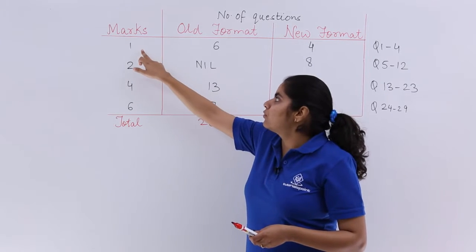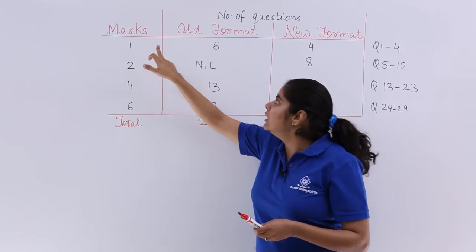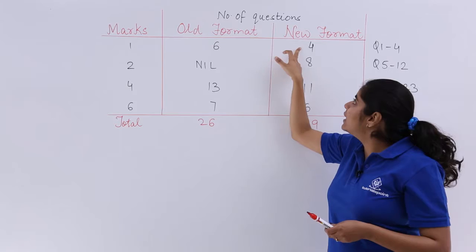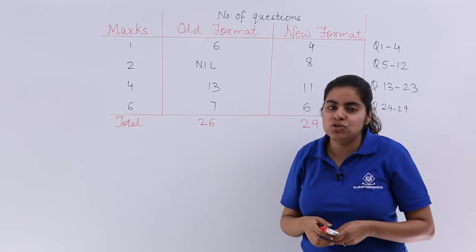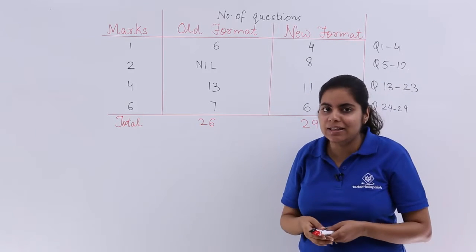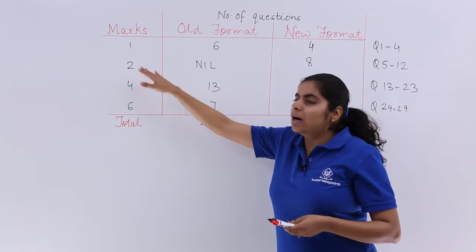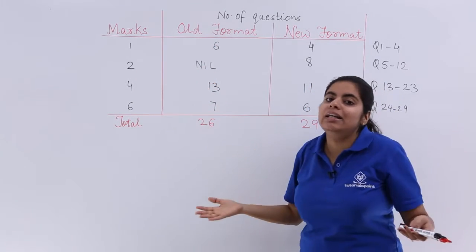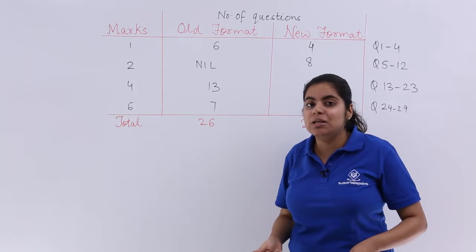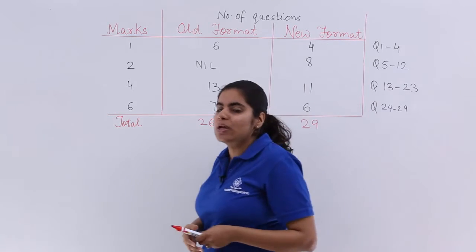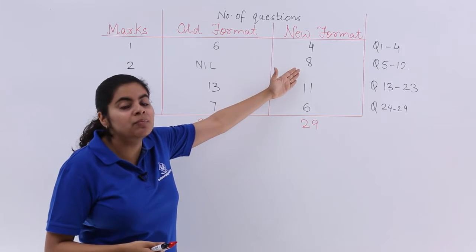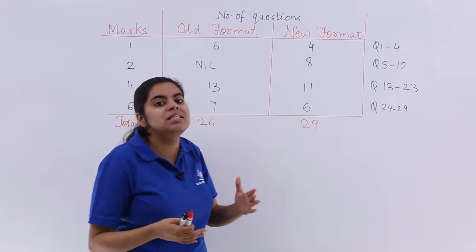So the number of marks, if you say one mark questions, earlier the old format had six one mark questions but now it has only four one mark questions. So only four one markers are there in the paper now. Two mark questions, in the old format there weren't any two mark questions but now the CBSE has introduced two mark questions.